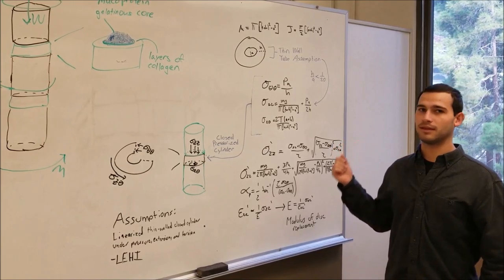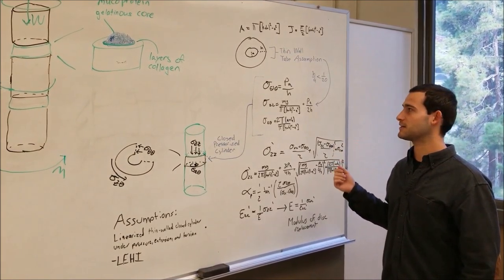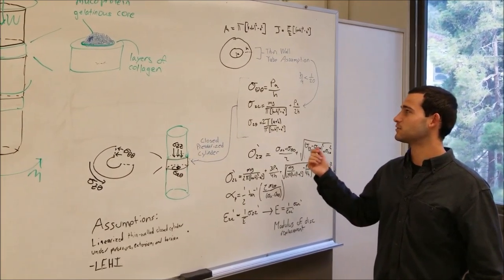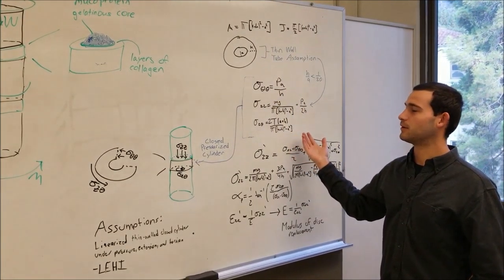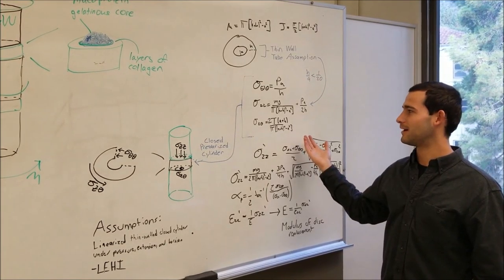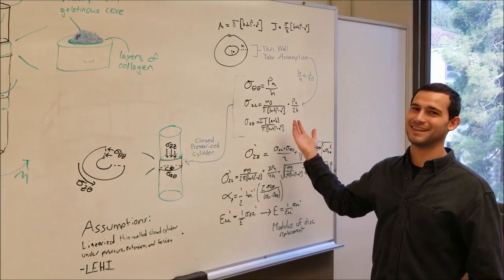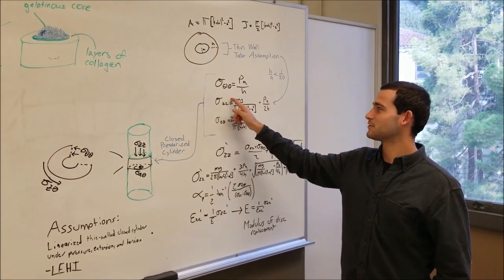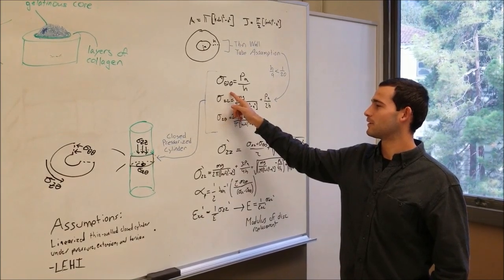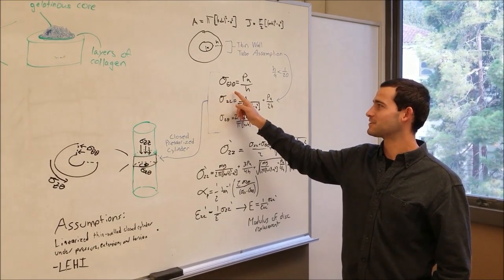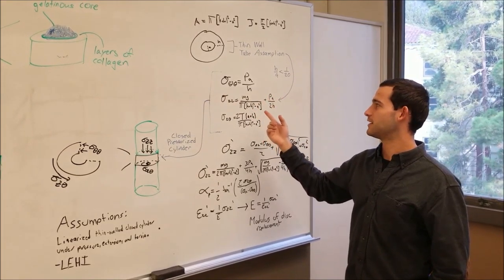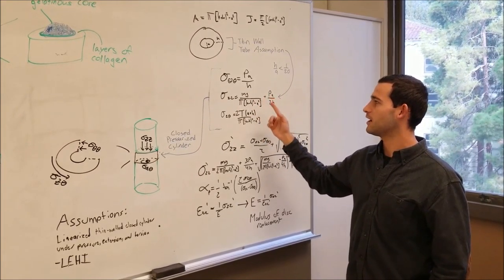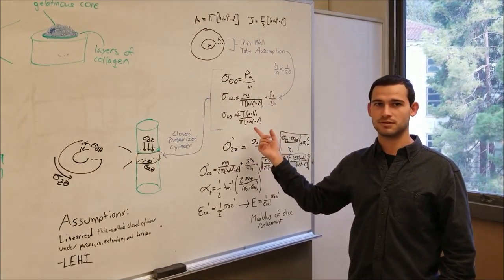We know this from class, where we can say that the circumferential stress is related to the pressure, the axial is related to the body weight and pressure, and then torsional is related to the torsional stress.